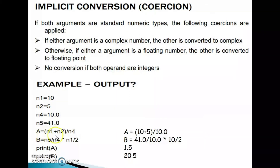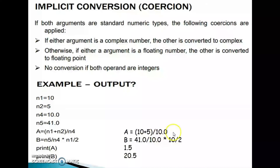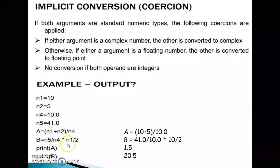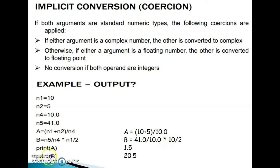For A equals N1 plus N2 divided by N4, that is 10 plus 5 divided by 10.0, and B equals N5 divided by N4 times N1 divided by 2, that is 21.0 divided by 10.0 times 10 divided by 2 — the outputs are: print A gives 1.5, print B gives 20.5. These are float type values.